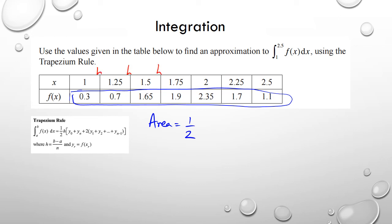and that's multiplied by y0 plus yn. Just remember, y0 is your first one, y1, y2, y3, all the way to y6. It's basically always the first and last term you add. So we're going to have y0, which is 0.3, plus 1.1. The y0 and yn are just added at the end. Then two times the rest of the stuff in the middle, which is 0.7 plus 1.65 plus 1.9 plus 2.35 plus 1.7, and then put it all together.